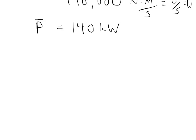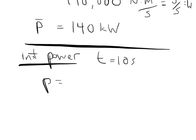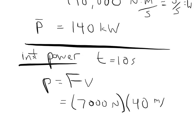Next, we calculate the instantaneous power at T equals 10 seconds. The instantaneous power is the force at that moment times the instantaneous velocity. The force produced by the car is again 7000 newtons, and the instantaneous velocity at 10 seconds is 40 meters per second. That gives 280,000 watts, or 280 kilowatts.